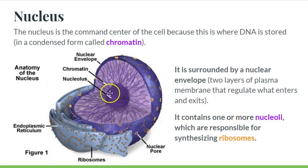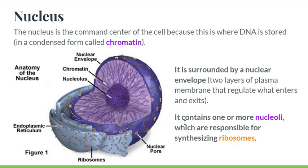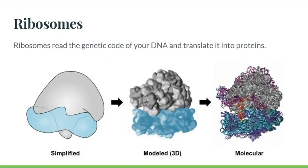That nucleus has a dark, dense region that you can usually see when you stain cells and look at them under the microscope. When you look at onion cells this week, you'll likely be able to see this nucleolus — this dark region within the nucleus. That is a condensed region where ribosomes are made; there's lots of RNA in that region. Sometimes there's more than one, in which case you would refer to them as nucleoli. All of that — the chromatin and the nucleolus or nucleoli — are surrounded by a nuclear envelope, which is two layers of plasma membrane that helps regulate what enters and exits. You can see all these little donuts here — those are nuclear pores.